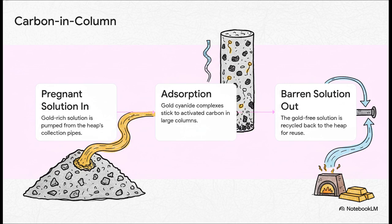The Pregnant Solution gets pumped into these huge columns that are packed with carbon granules. Now, activated carbon is incredibly porous. And it basically acts like a magnetic sponge, but just for the gold-cyanide complex. The gold literally sticks to the carbon. And the now barren, gold-free liquid? It flows out the other end, ready to be recycled right back to the top of the heap to go dissolve some more gold.